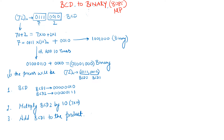We want to convert this BCD into a binary number. What we do is split these two numbers into the upper BCD and lower BCD, or MSB and LSB. So 72 is written as 70 plus 2, meaning 7 times 10 and 2 times 1 — this is the positional weightage of these two numbers.